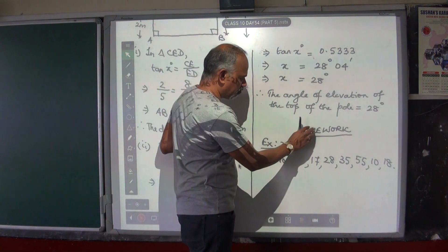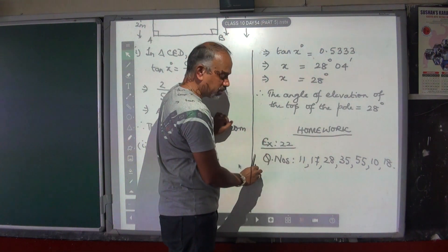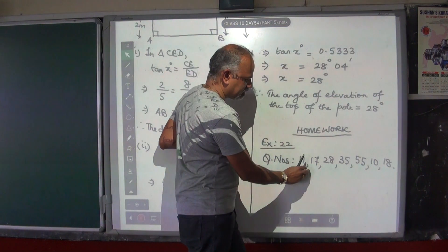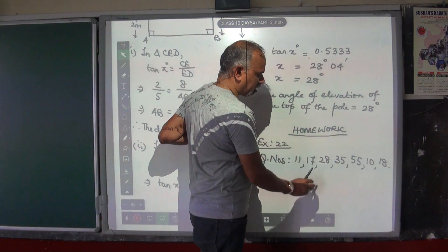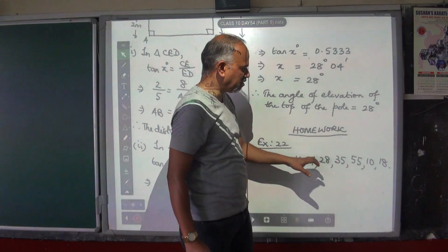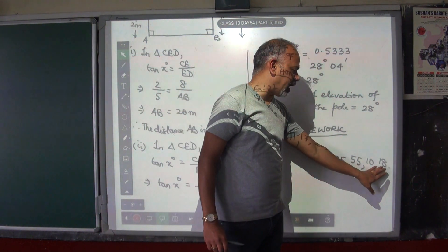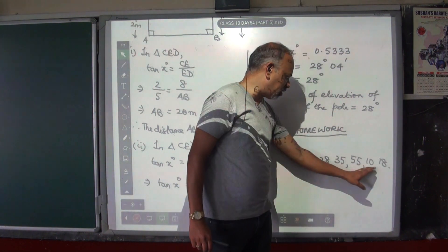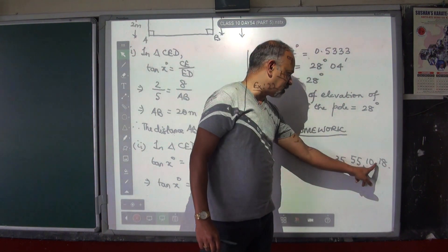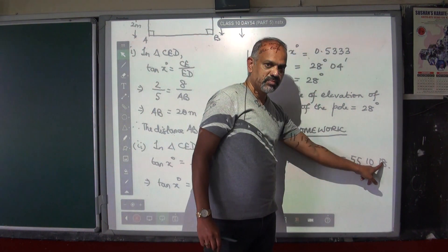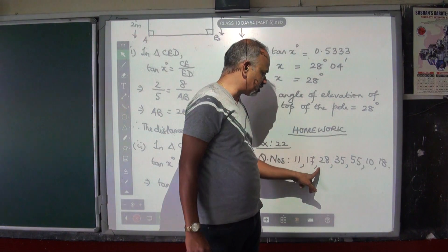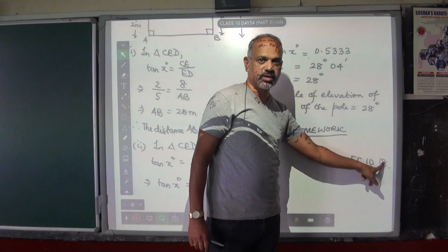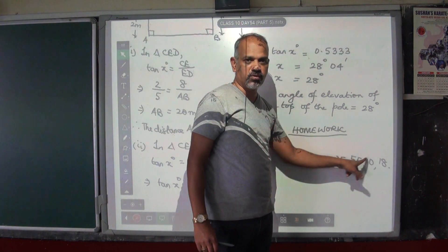The homework for today is exercise 22, question numbers 11, 17, 28, 35, 55, 10, and 18. Follow this order — these numbers — in doing your homework.